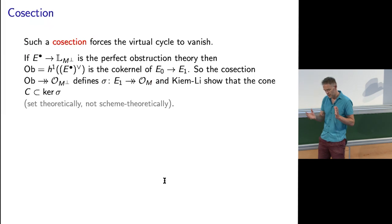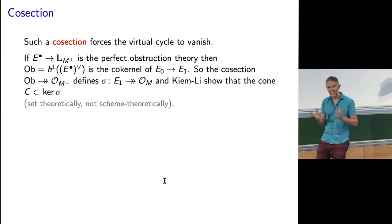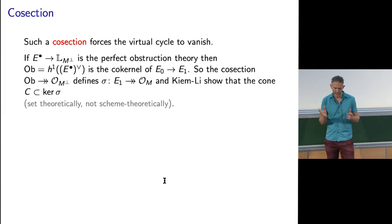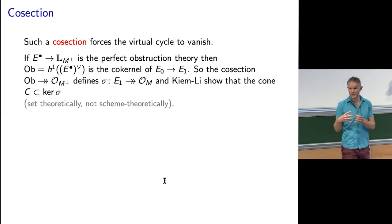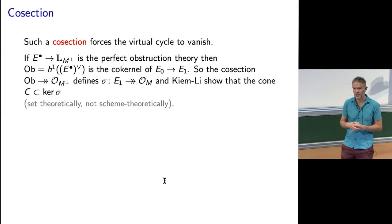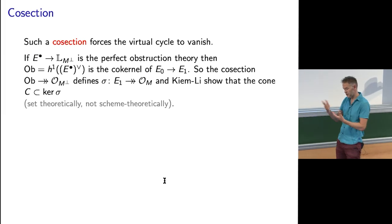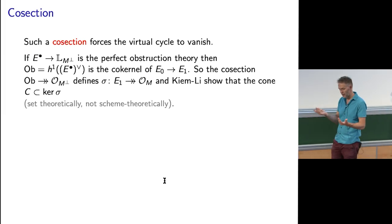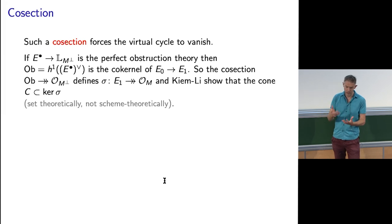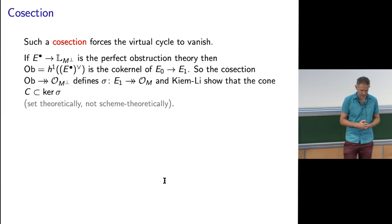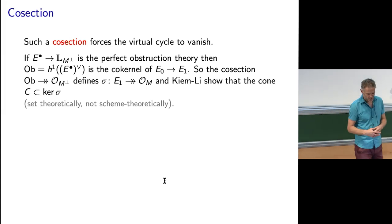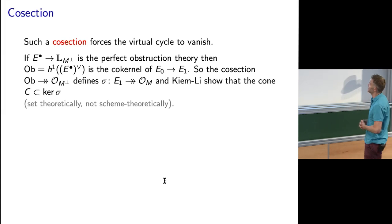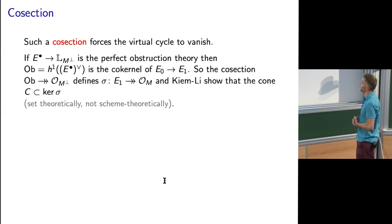We've seen that the virtual cycle you could think of roughly as the Euler class of the obstruction bundle. So if the obstruction bundle has a nowhere vanishing section, or its dual has a nowhere vanishing section, you would expect this Euler class to be zero. And that is what turns out to be true.